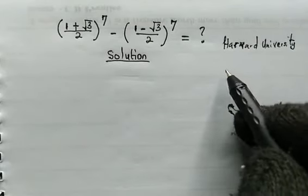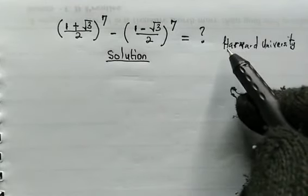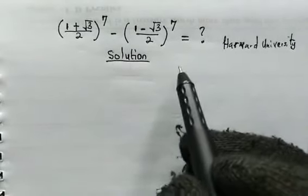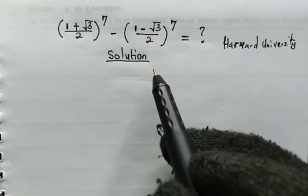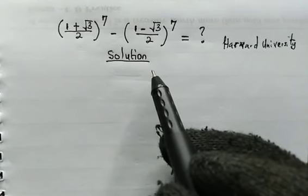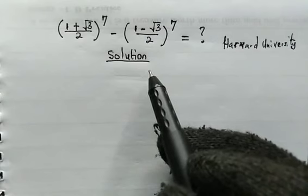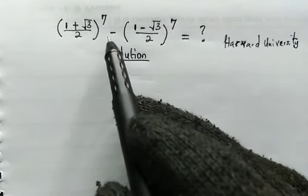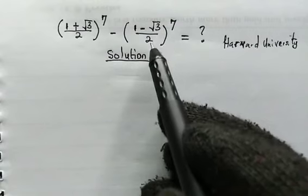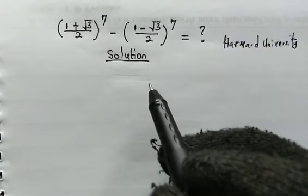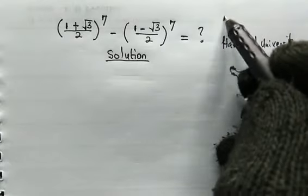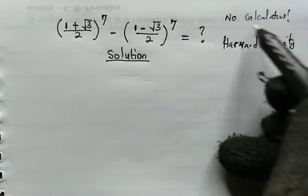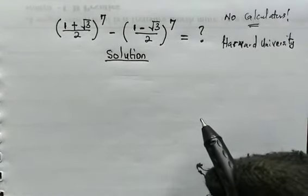Hello, welcome back once again. Today we have a Harvard University problem. We're going to evaluate the powers — specifically the seventh powers of irrational numbers. The expression is: (1 + √3)/2 all to the power of 7, minus (1 − √3)/2 all to the power of 7. We will not make use of calculators, so bear that in mind. Let's see how we're going to solve this problem.